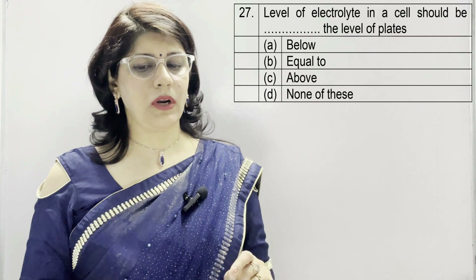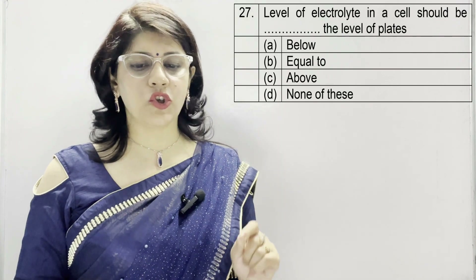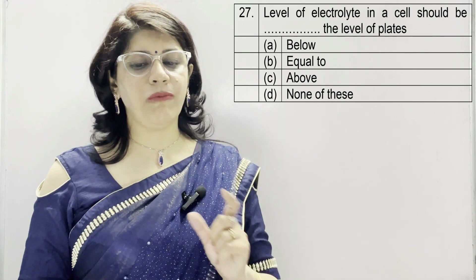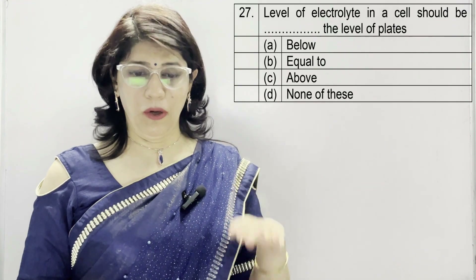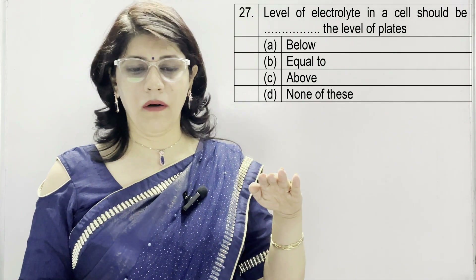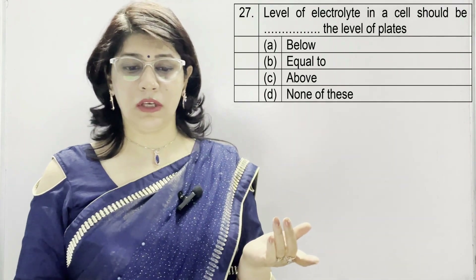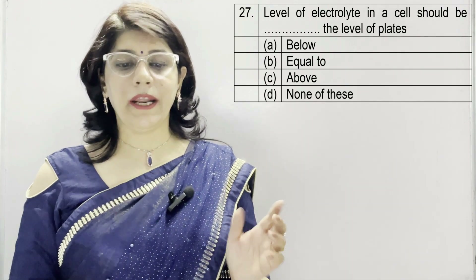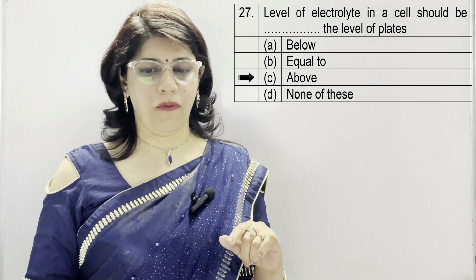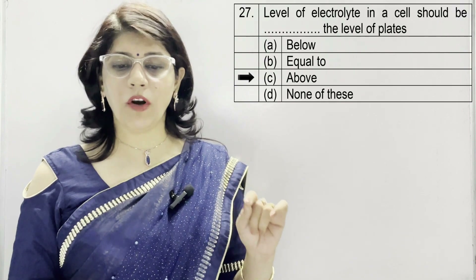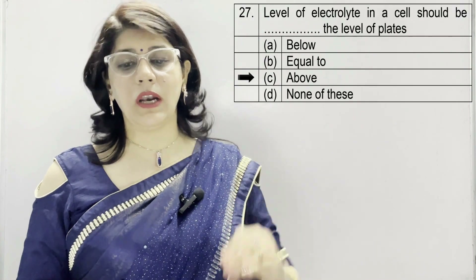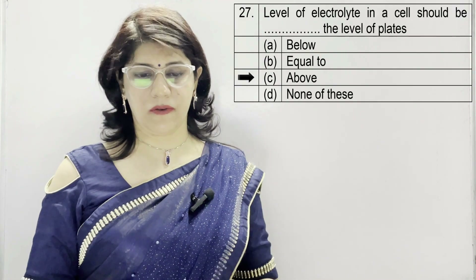In question number 27: the level of electrolyte in a cell should be dash the level of plates — below, equal to, above, none of these. The correct option is C — above. The level of electrolyte should be above the level of plates.